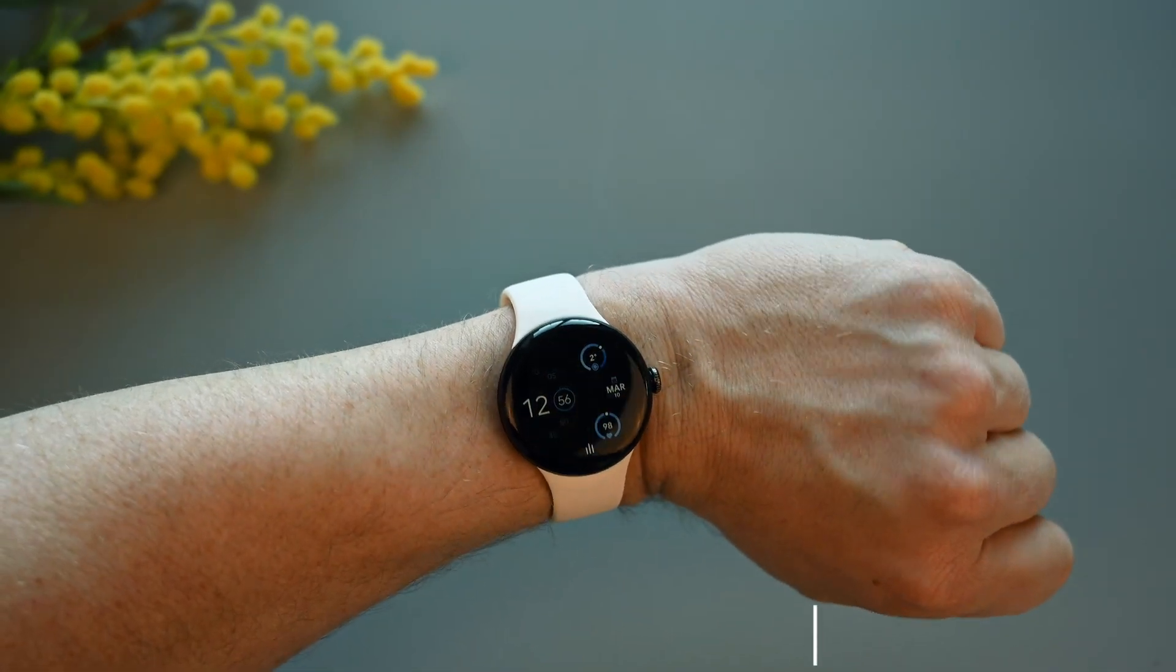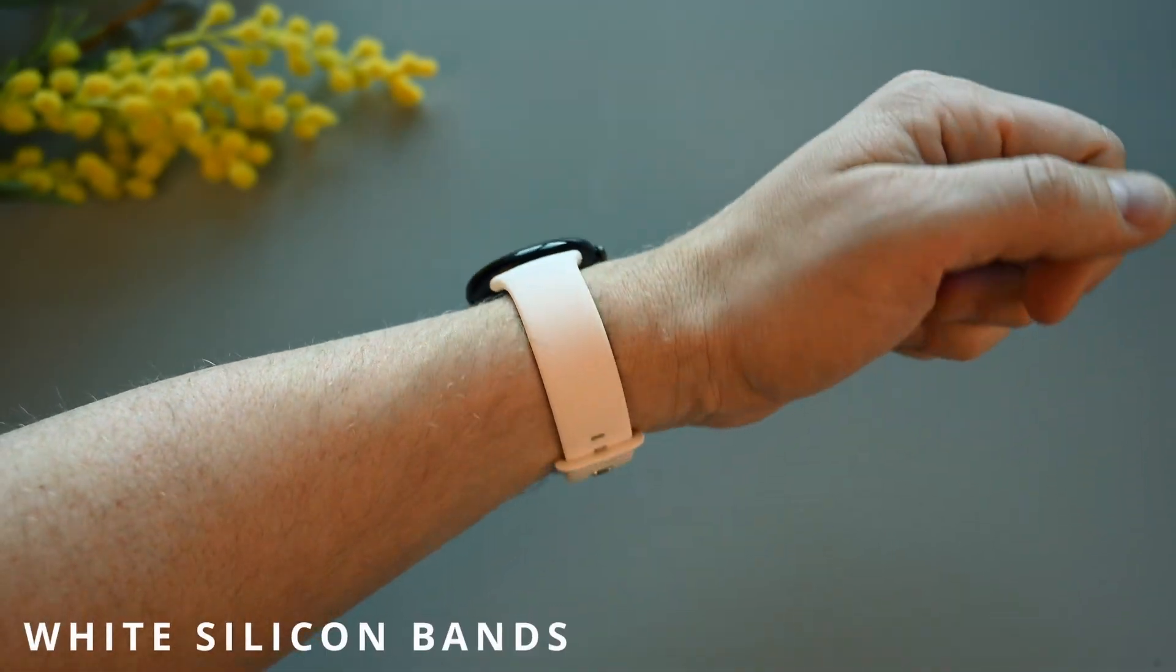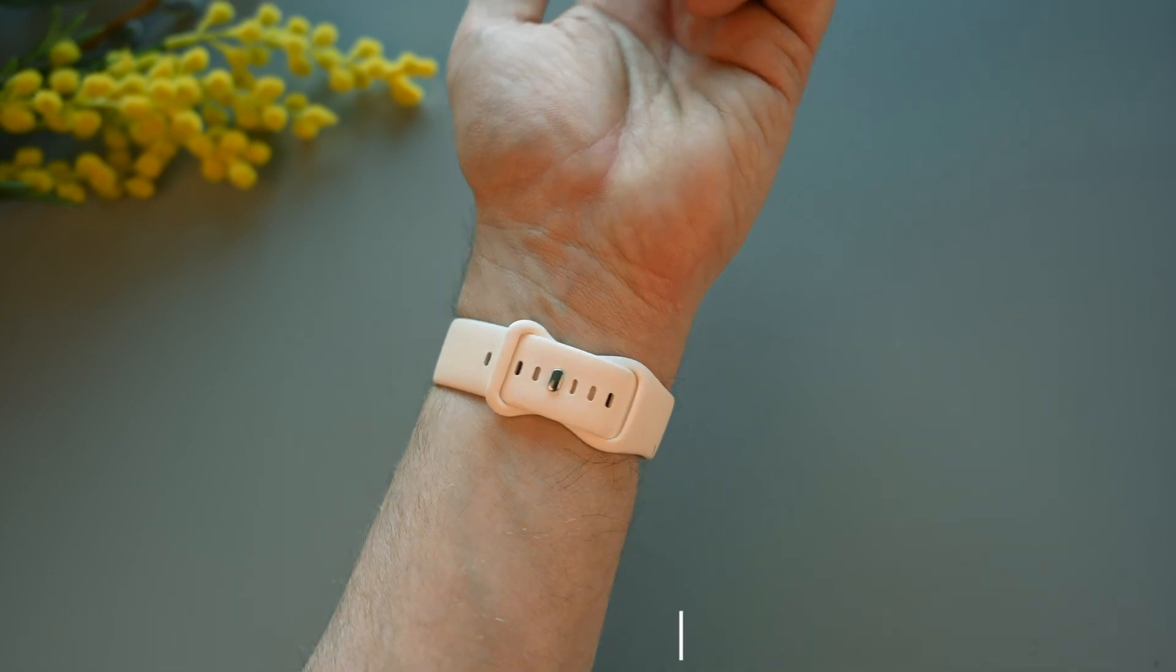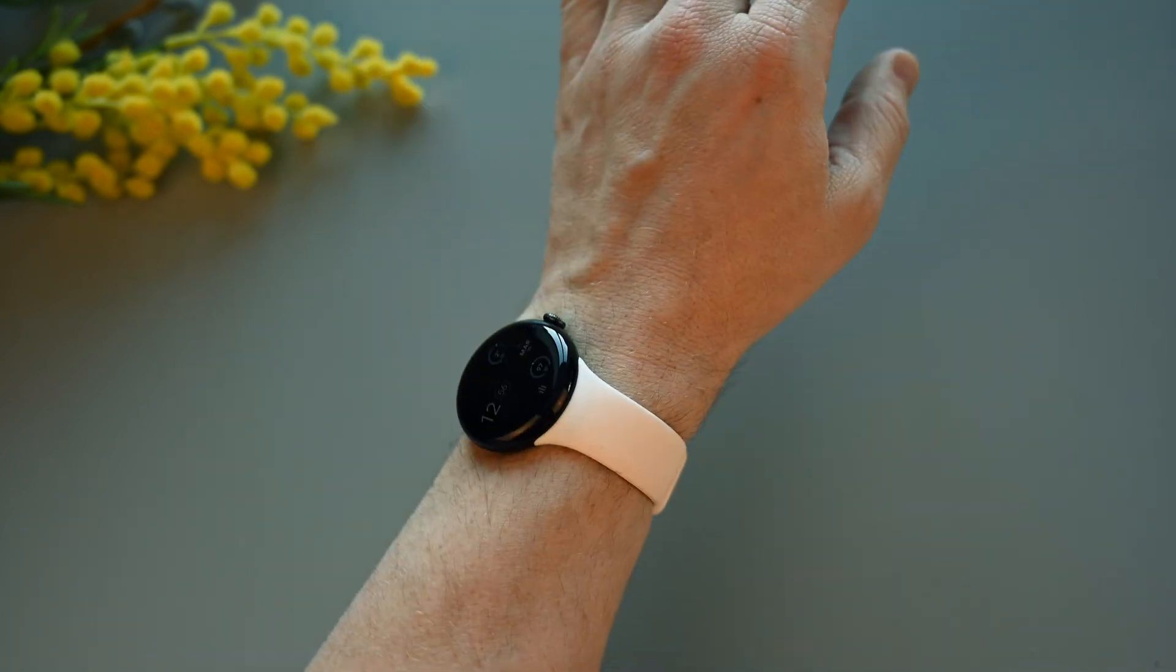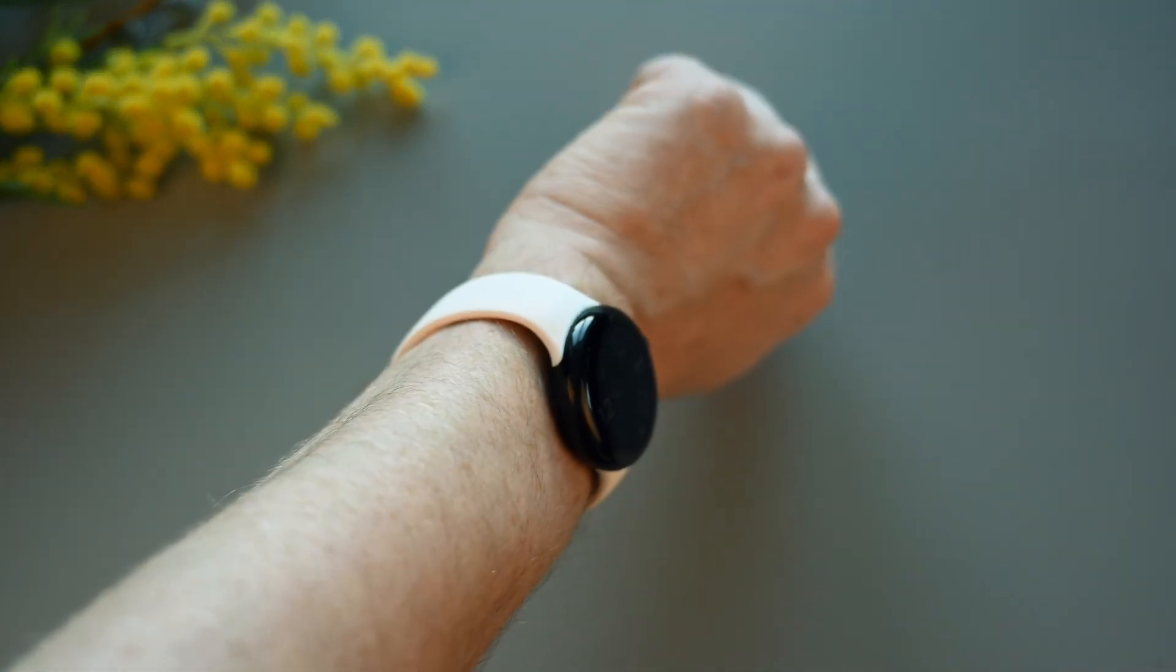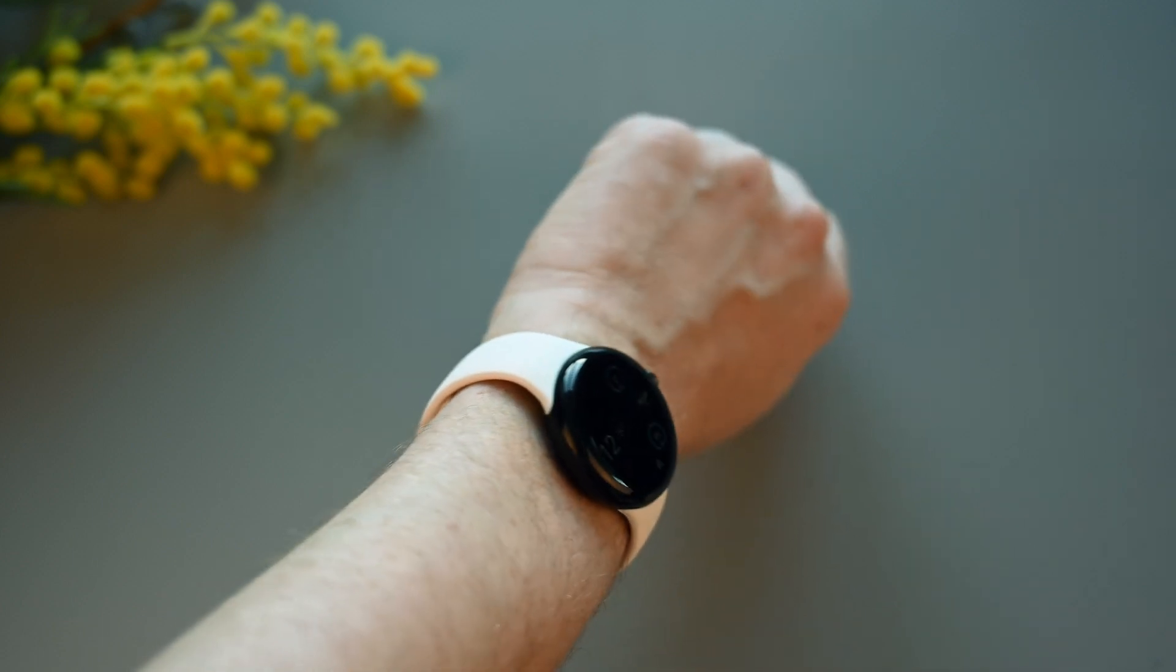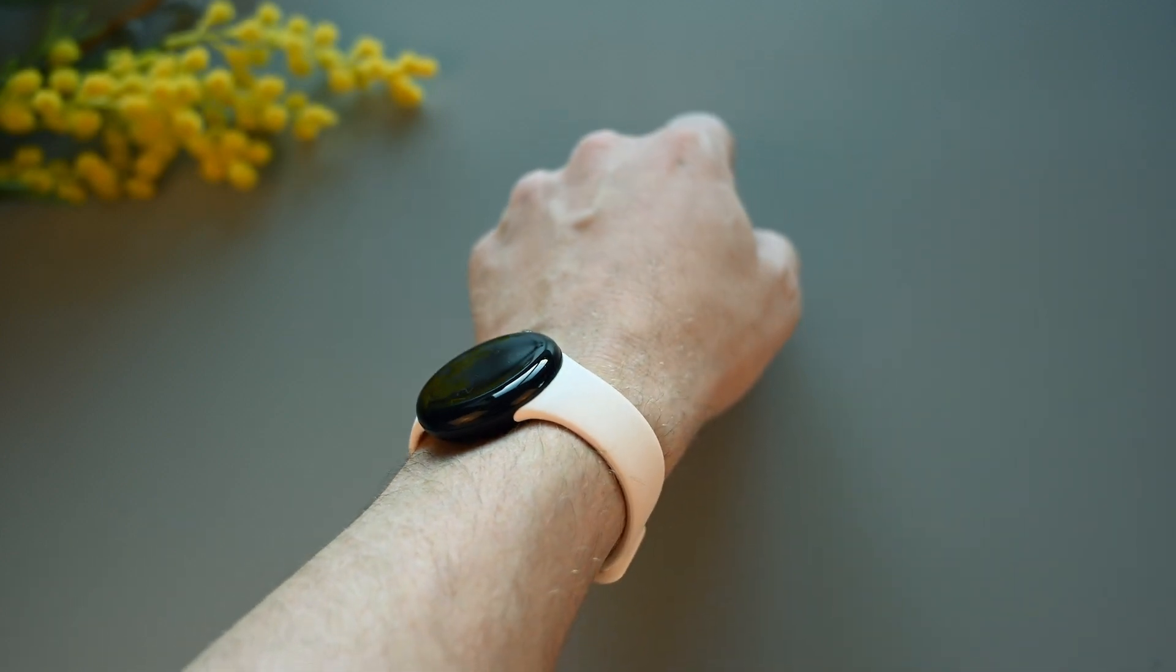At last, we have a set of bands that look like the original Google Pixel bands. But they are not original, and cost only about $3 including shipping. They come in all different colors, and are made of silicone. But there is a small difference.